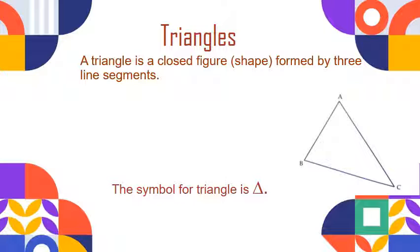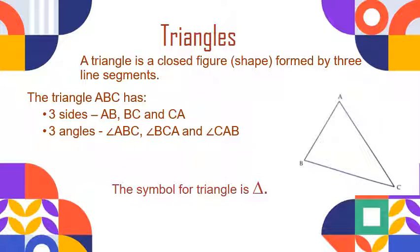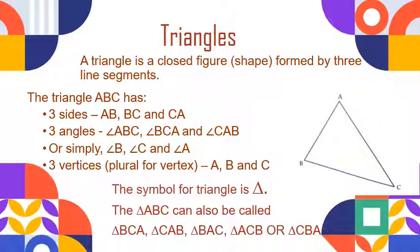Let us recall what we have learnt about triangles. A triangle is a closed figure or shape formed by three line segments. For example, in this figure we have triangle ABC, which has three sides: side AB, side BC, and side CA. It has three angles: angle ABC, angle BCA, and angle CAB, or simply angle B, angle C, and angle A. Triangle ABC has three vertices — vertex A, vertex B, and vertex C.